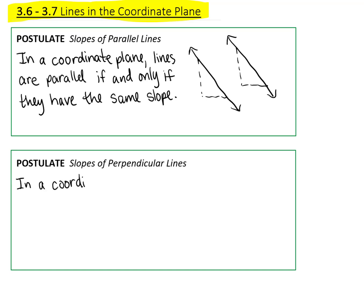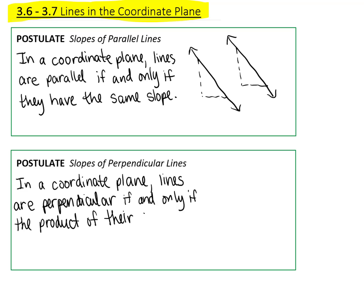For perpendicular lines, two lines are perpendicular if and only if the product of their slopes is negative 1, meaning the slopes relationship is that they'd be the opposite sign and the reciprocal of one another.